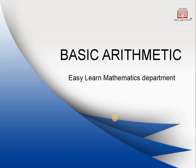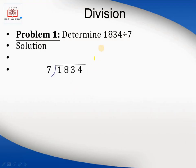This is Problem number one, in which we have to determine 1834 divided by seven. This is the simplest case where seven is the divisor and 1834 is the dividend. This is a completely divided case — no remainder. Sometimes division goes complex with decimals, but this is a simplest case.